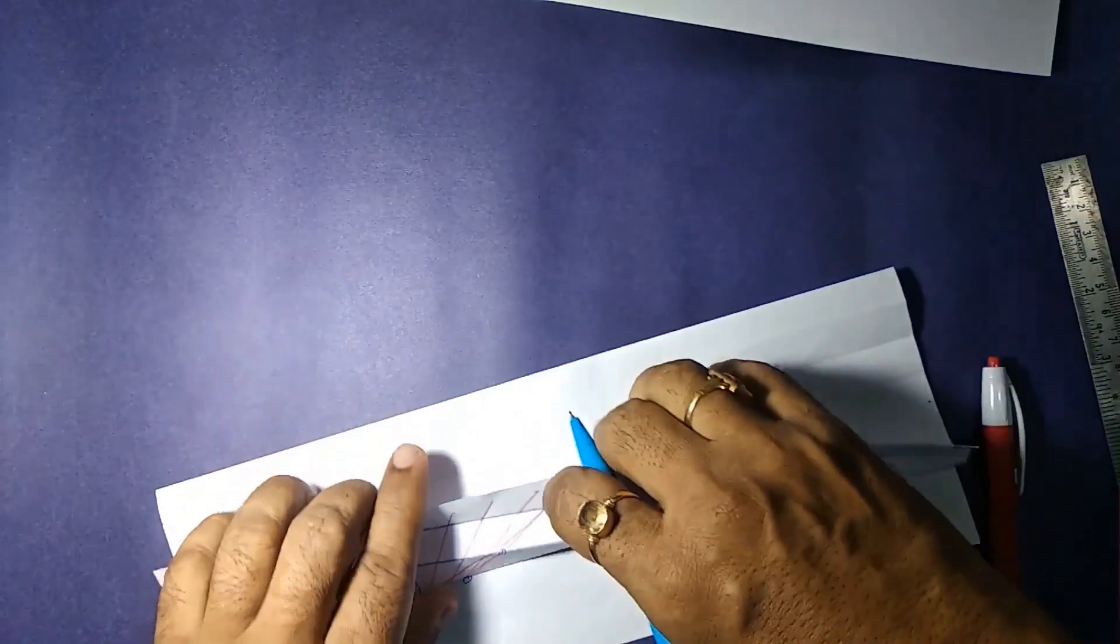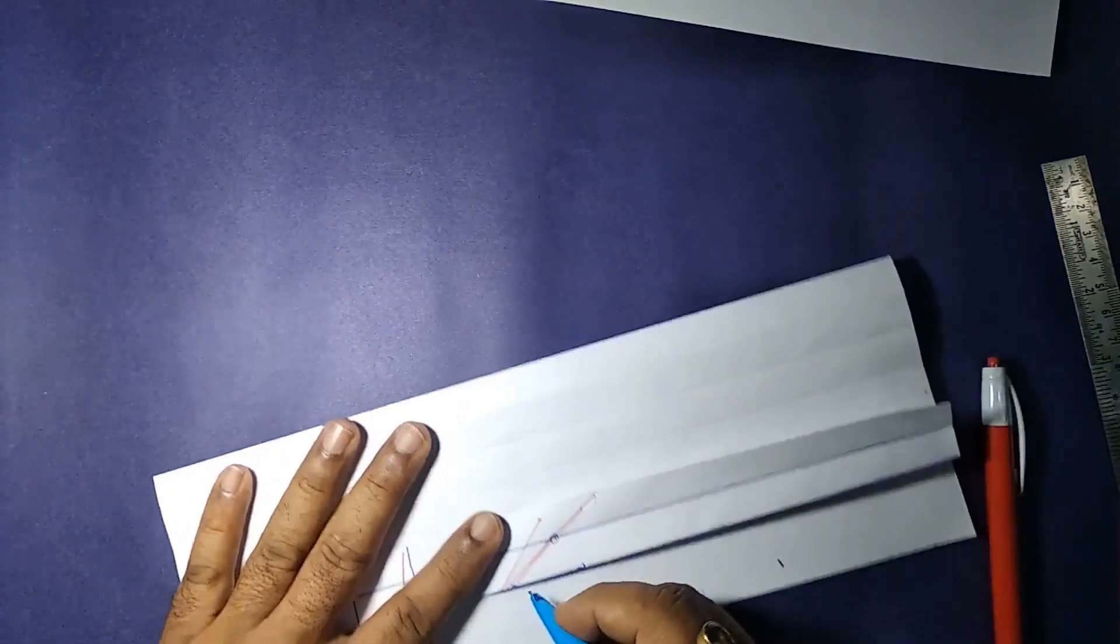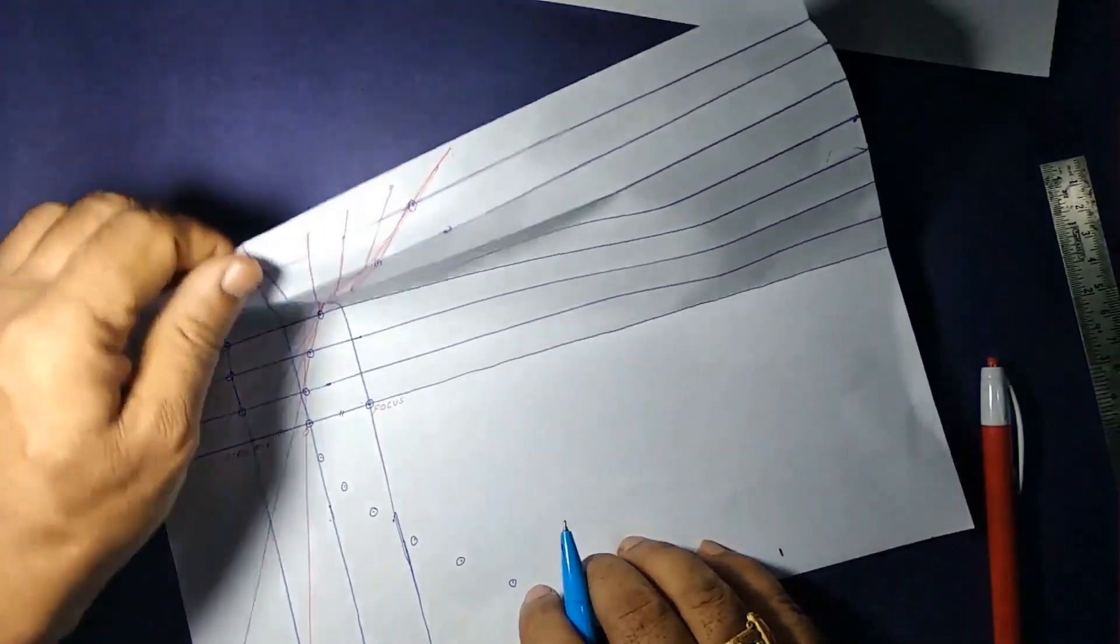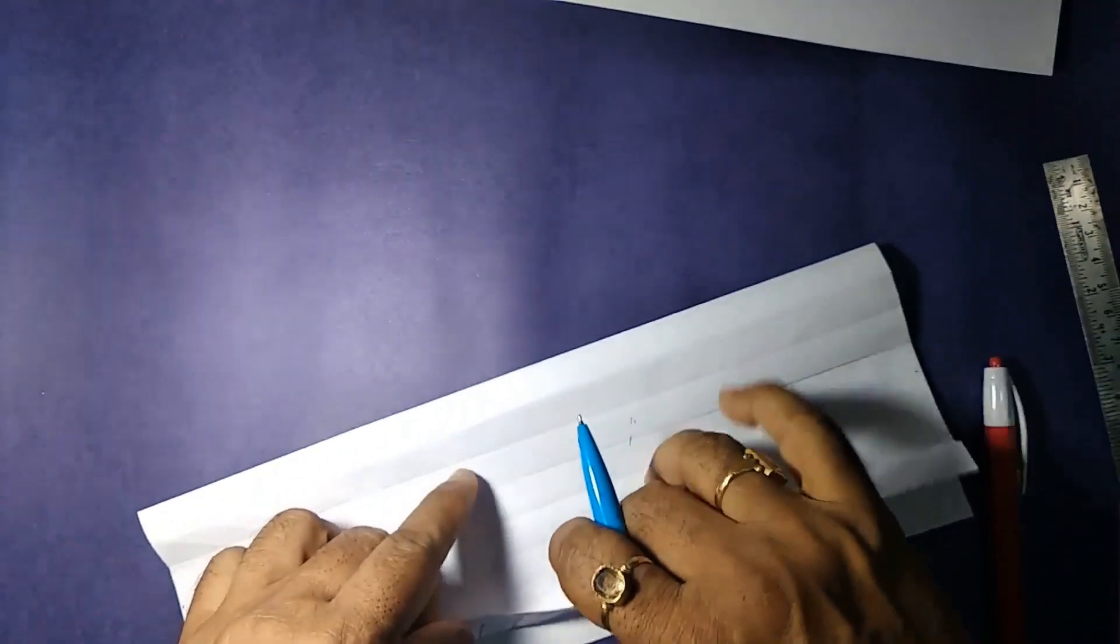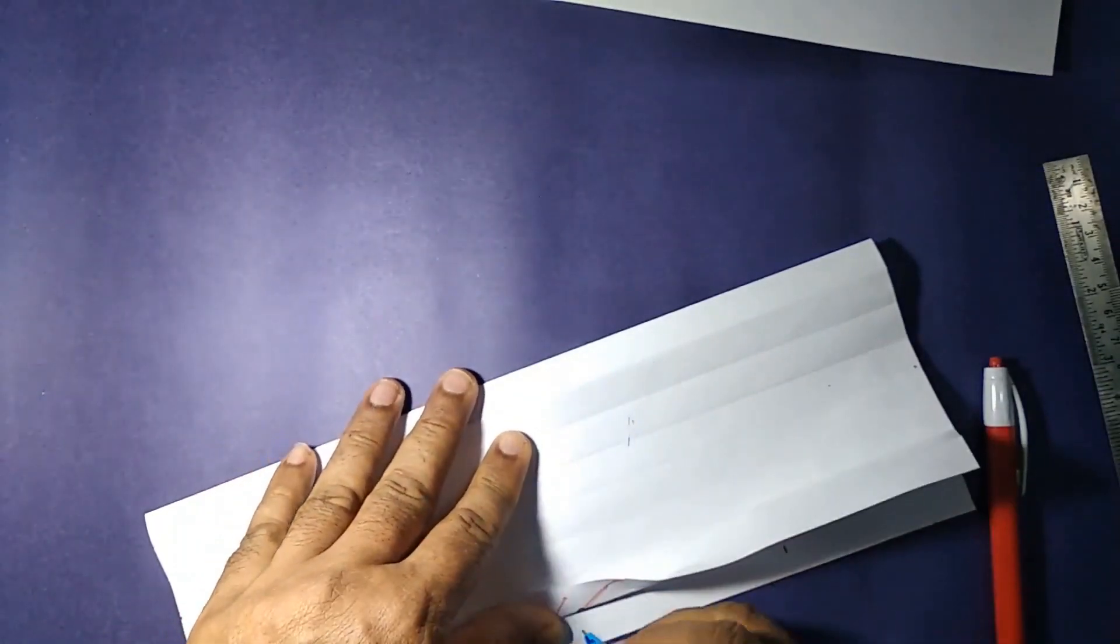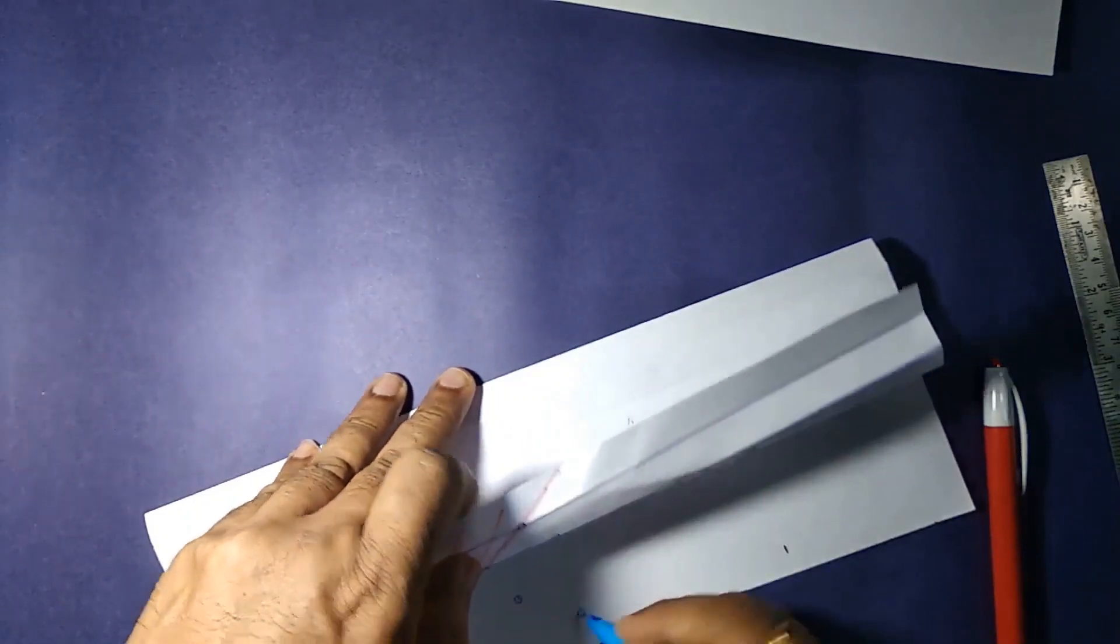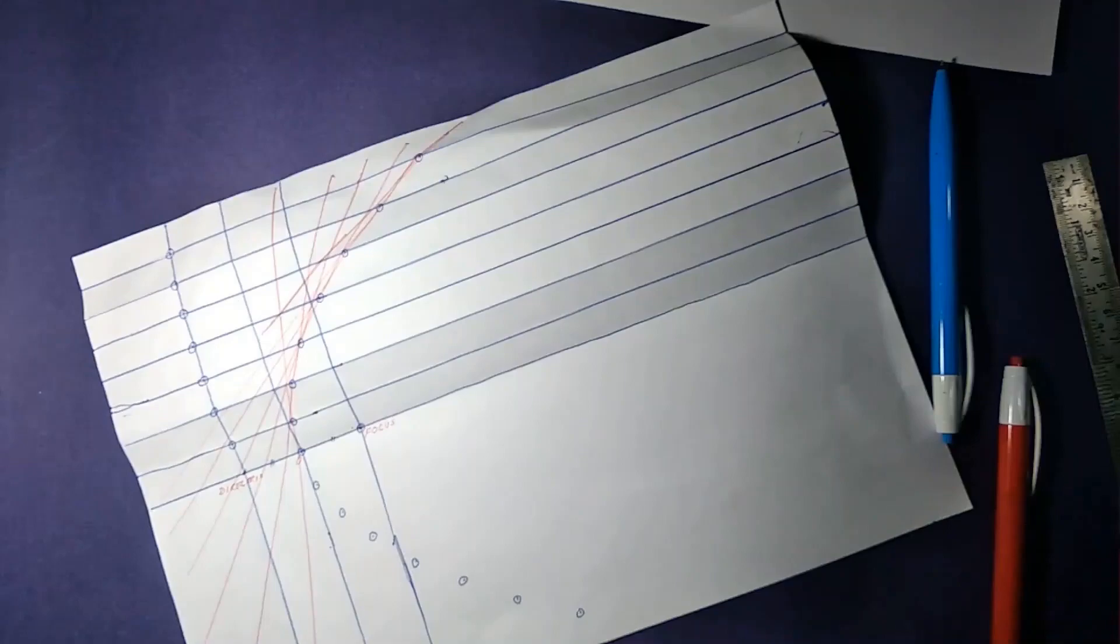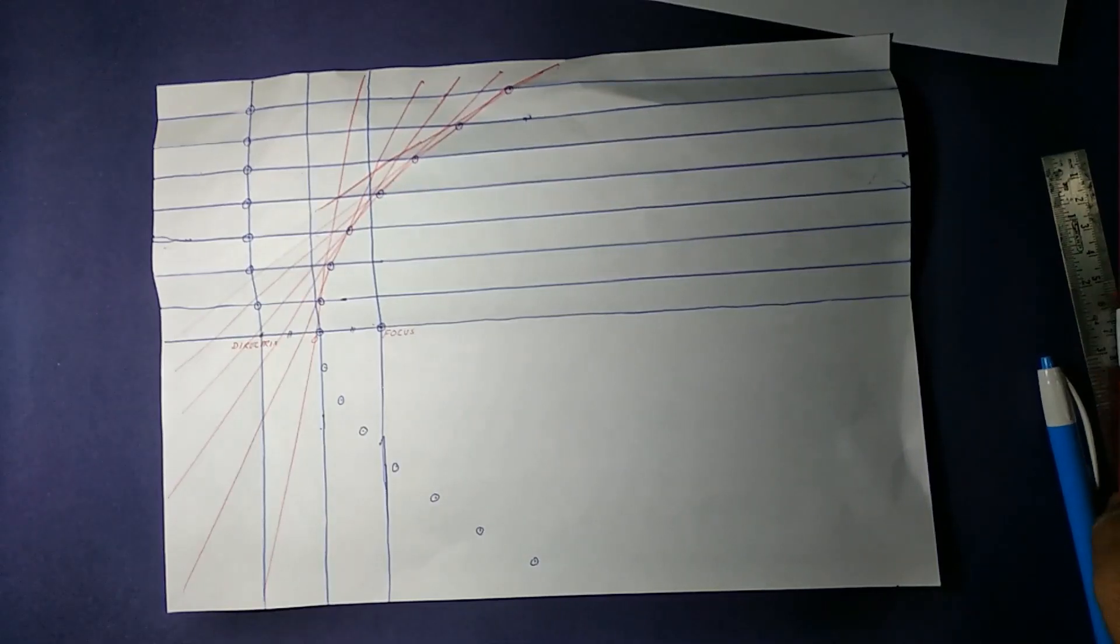We continue till all the points of the top part are marked on the bottom part of the paper also. And we got the parabolic shape means all these points we have marked are on the parabola.